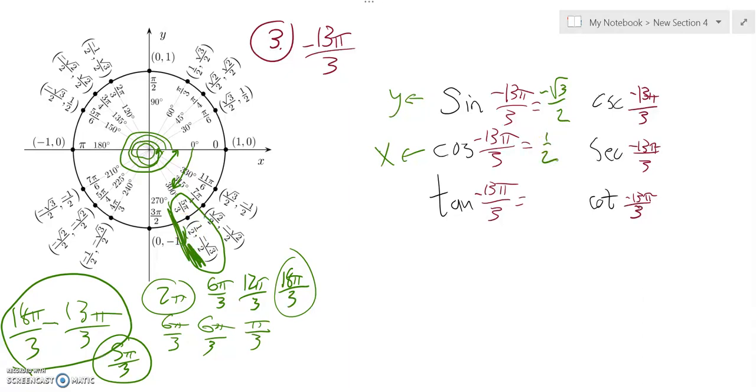And then tangent is y over x. So tangent would be negative root 3 halves over 1 half. The 1 halves divide out. So you just have negative root 3 divided by 1, which is negative root 3.